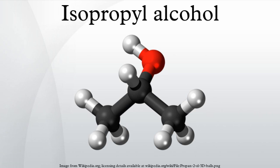Both processes require that the isopropyl alcohol be separated from water and other by-products by distillation. Isopropyl alcohol and water form an azeotrope, and simple distillation gives a material that is 87.9% by weight isopropyl alcohol and 12.1% by weight water. Pure isopropyl alcohol is made by azeotropic distillation of the wet isopropyl alcohol using either diisopropyl ether or cyclohexane as azeotroping agents.